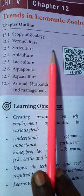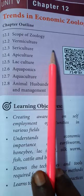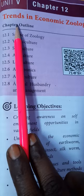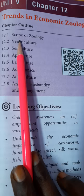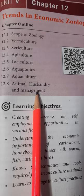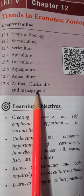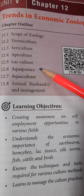So children, this is a different part — it's not concept-oriented but life-oriented. Trends in economic zoology, Chapter 12. We are going to learn about the scope of zoology: vermiculture, sericulture, apiculture, lac culture, aquaponics, aquaculture, and animal husbandry and management. All these terms are related to each category and we will see them one by one. Learning objectives: creating awareness on self-employment opportunities in various fields.